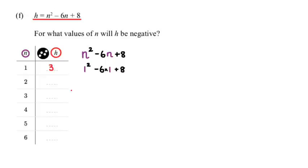Then I repeat the process again but instead of 1, this time I try with 2. So 2 squared minus 6 times 2 plus 8, and this is equal to 0.